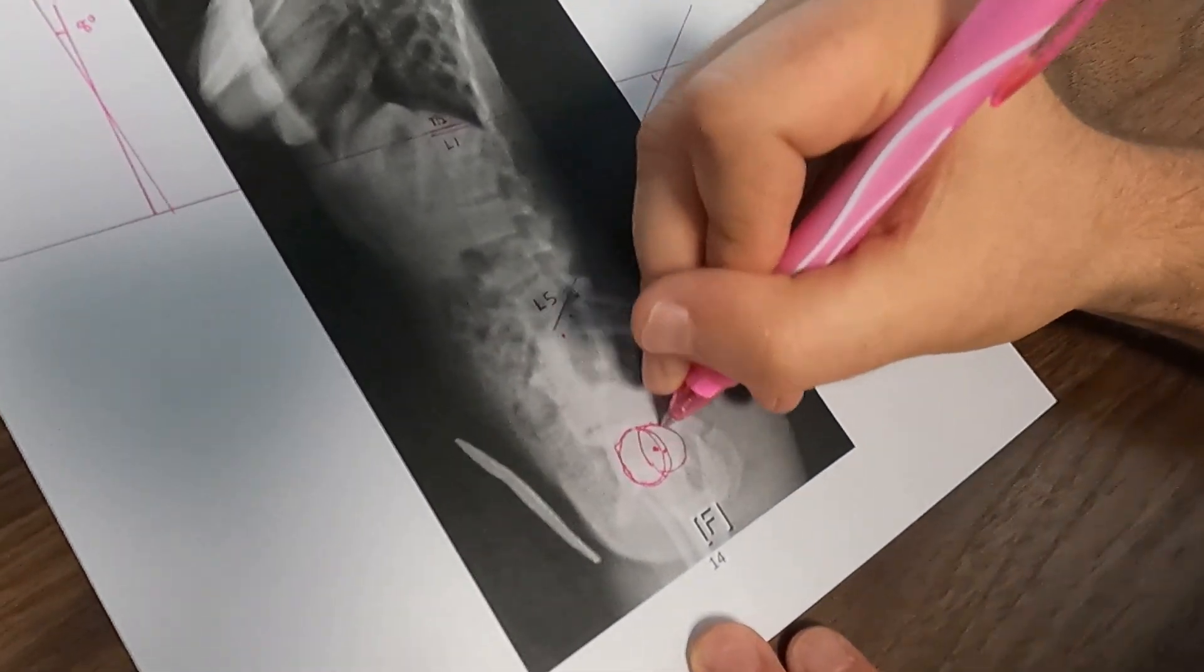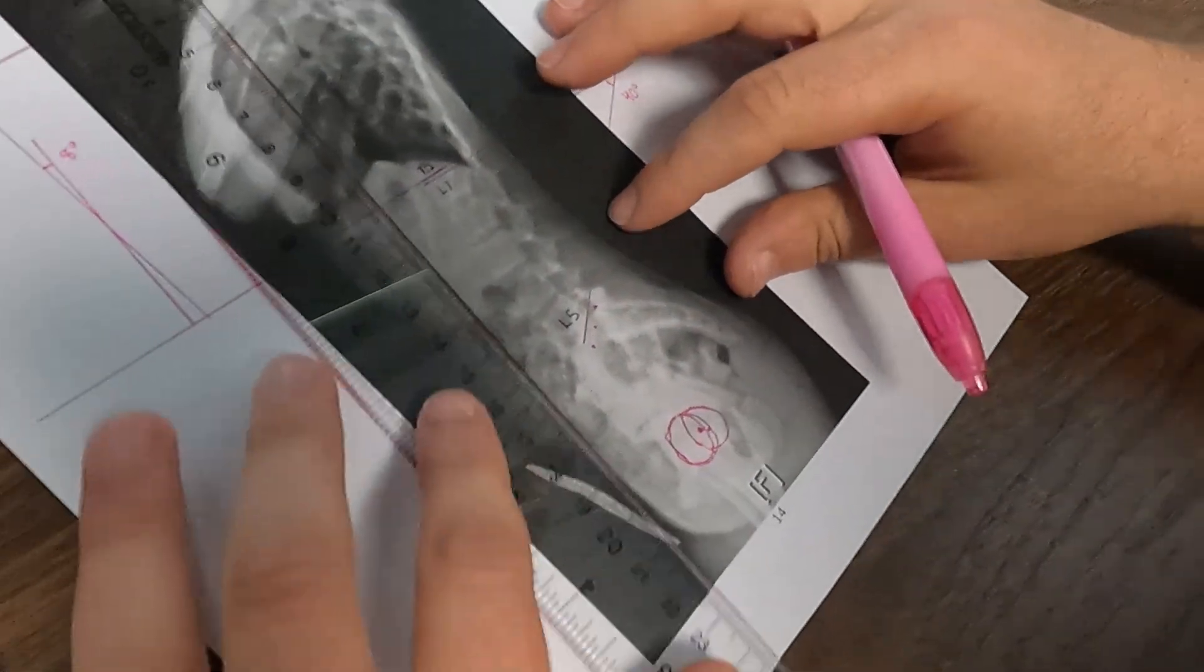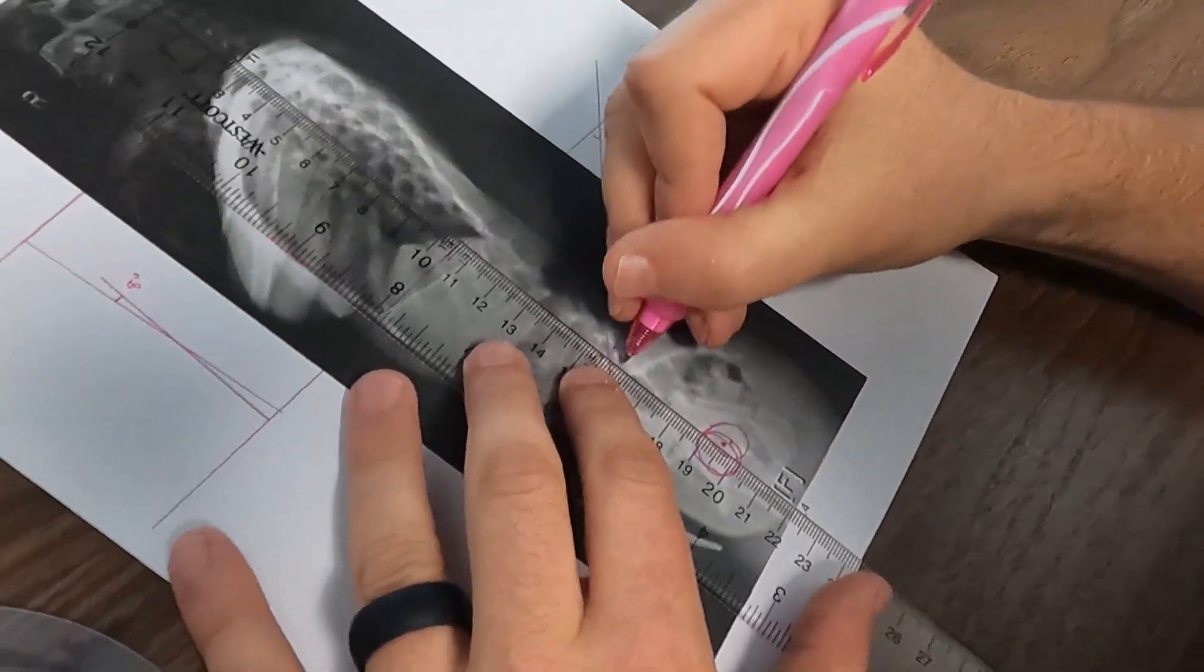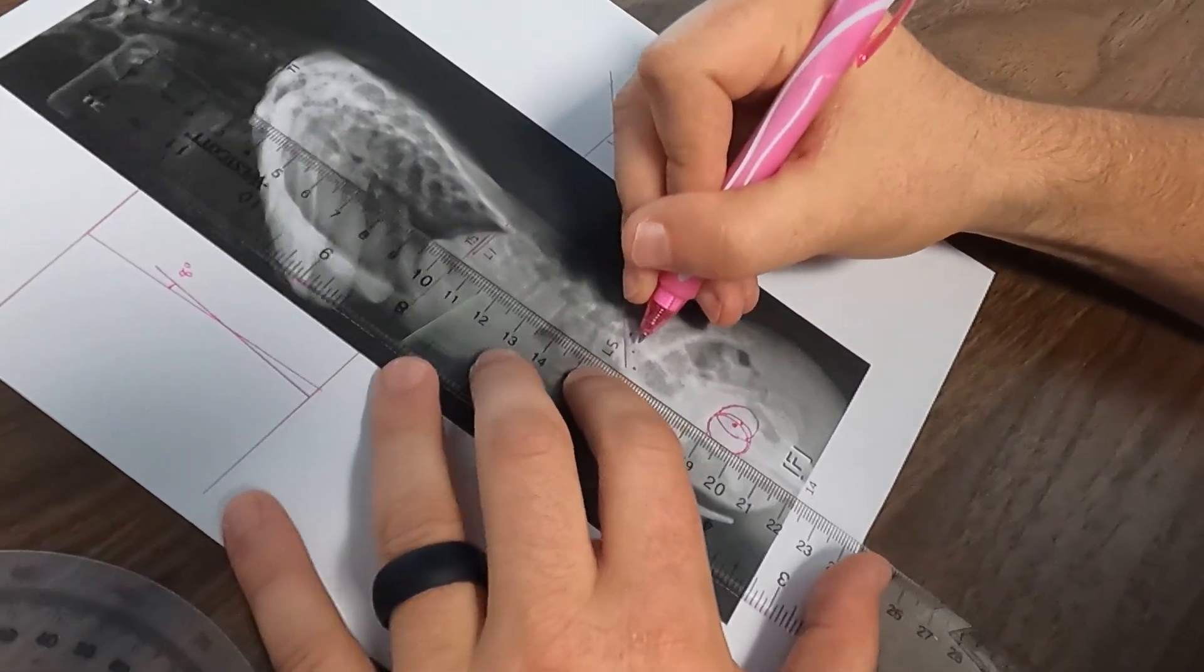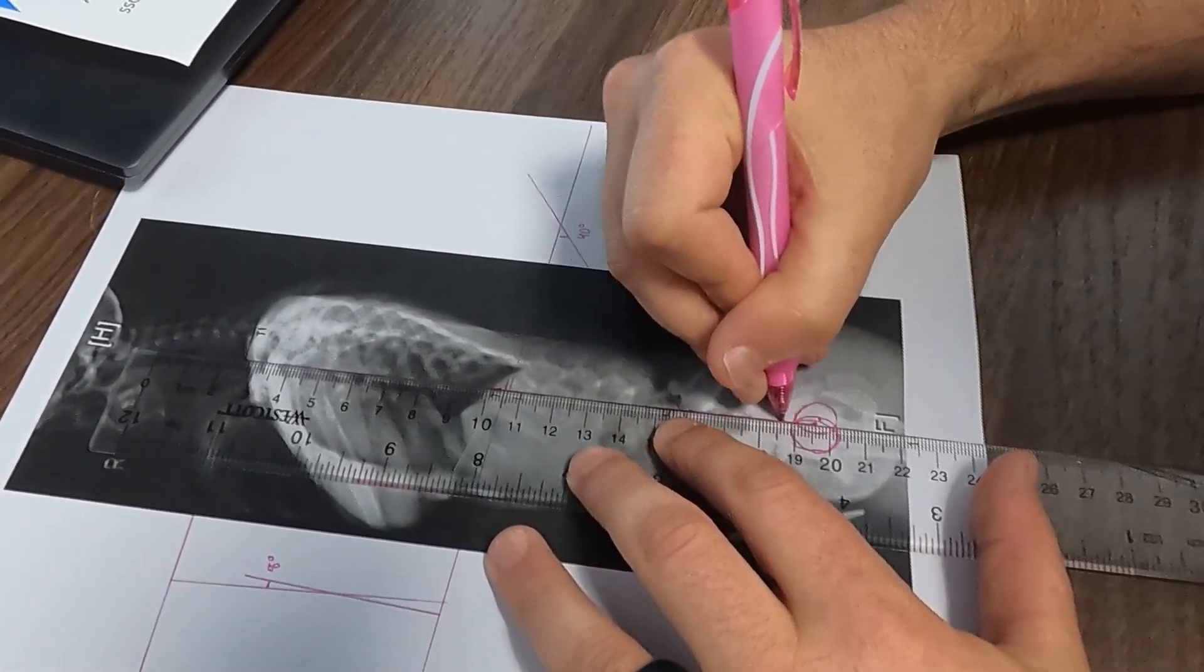We're going to find the center of where those two circles intersect. From there, we're going to take that into the center of the base of the sacrum. And we're going to draw a line there.